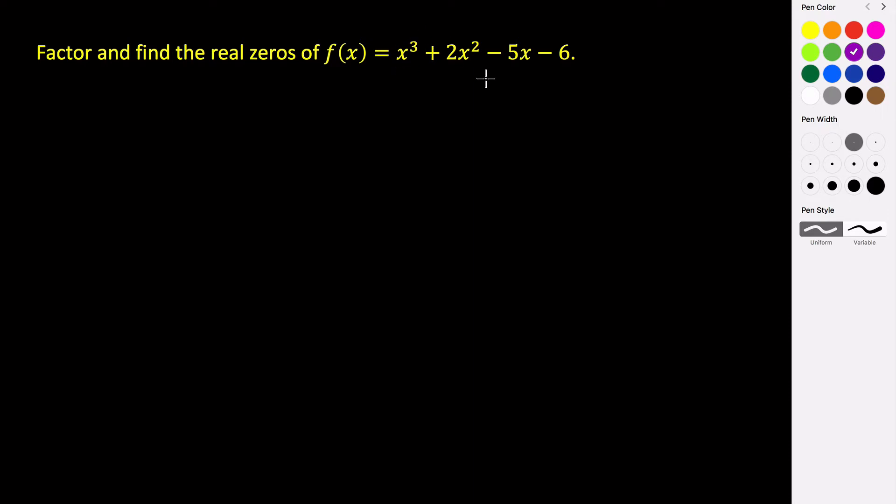We know that this is going to have at most three real zeros because the degree of our polynomial is three, and the number of real zeros has to be equal to or less than the degree of our polynomial. So let's use the rational zeros theorem. Remember our leading coefficient here is one and then this here is negative six. So we call this p and this is q.